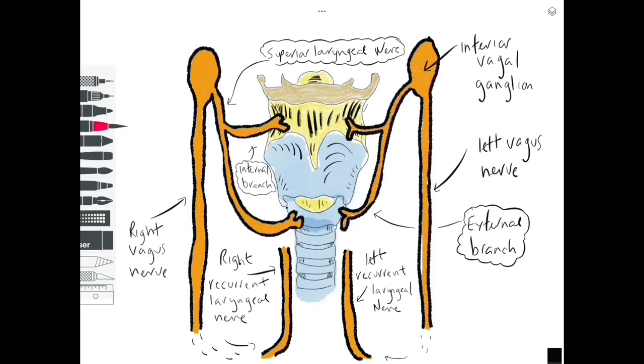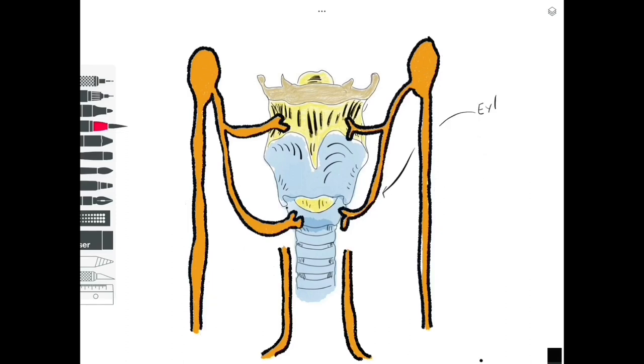So how does the innervation work then? Well, let's take a look now at the functions of each of these. We're going to start off by talking about the external branch of the superior laryngeal nerve. Now this supplies the cricothyroid muscle only. So it only supplies one muscle, it's motor to the cricothyroid muscle.